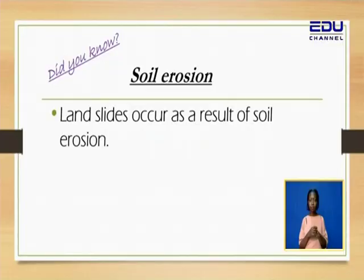We're going to see how this fourth type is formed and why. But before we go to that, here is a fact: landslides occur as a result of soil erosion.